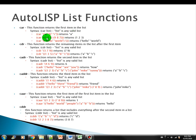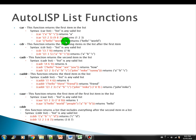In this example here, we have a list of two lists. So we issue the car function and it returns the first list from this list. Also, we have a list of strings and an integer. We issue the car function and it should return the first item in the list — in this case, the list of "hello world".